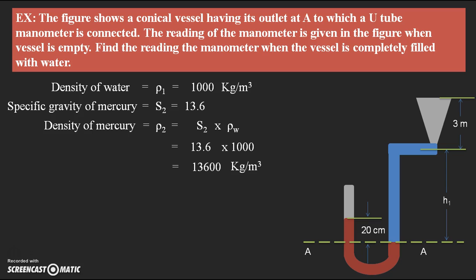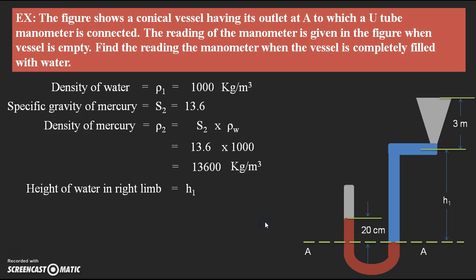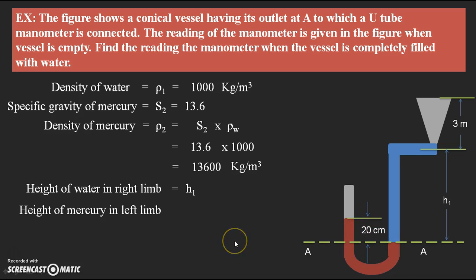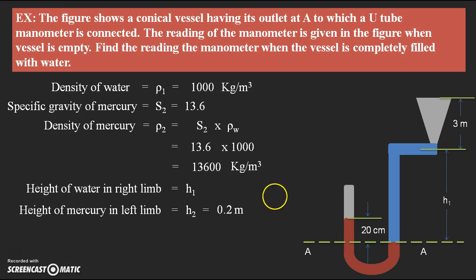Next, I would like to mention the height of the liquid levels in the U-tube manometer. The height of liquid one, which is water in the right limb, is H1, which we need to find. The height of mercury in the right limb from datum AA is H2, which equals 0.2 meters, because 20 centimeters equals 0.2 meters. Next we go for finding H1 by writing the equilibrium condition of pressure forces acting in the two limbs.